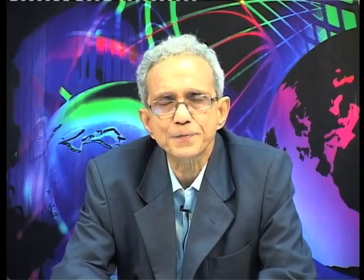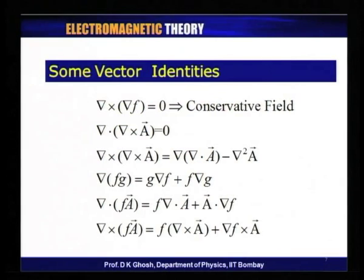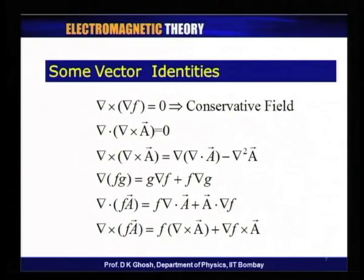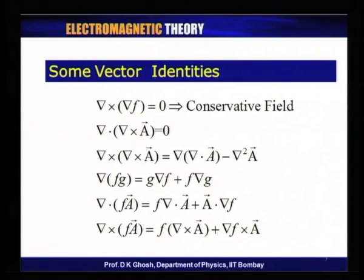I have listed a few vector identities; I will not be deriving them, but will expect you to try to work out some of them. The first equation says curl of a gradient is equal to zero. We have discussed it earlier: if a force field can be written as a gradient of something, then that is a conservative field. The curl of such a force field is zero. This is actually a test of a conservative force field: del cross (del f) equals zero.